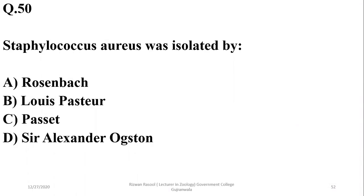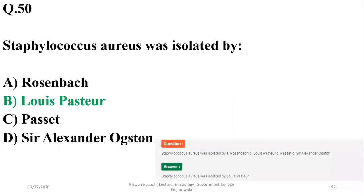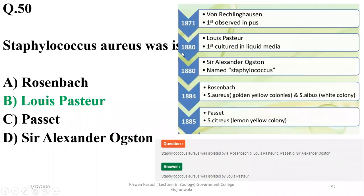Question 49: Staphylococcus aureus was isolated by Louis Pasteur. There is some uncertainty about the specific name — it may have been Rosenbach — and the exact isolator is unclear. The right option appears to be beta.